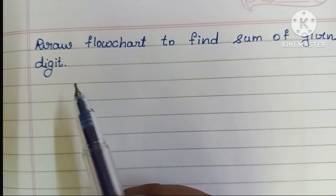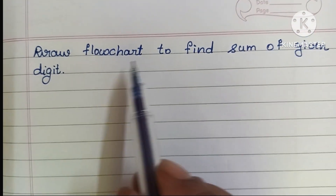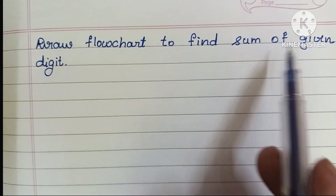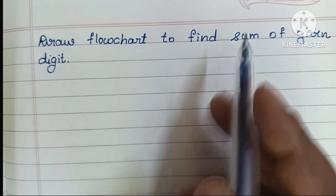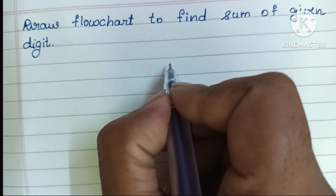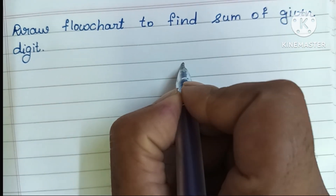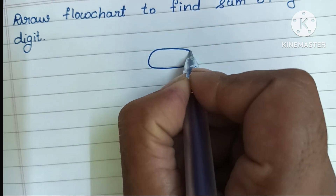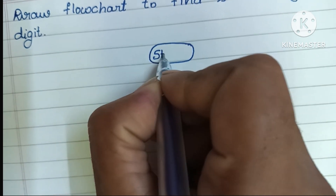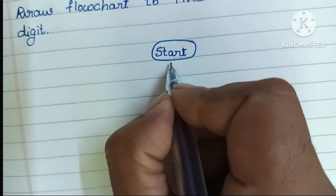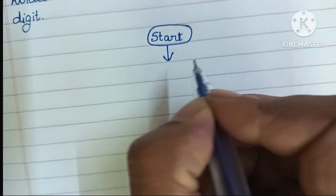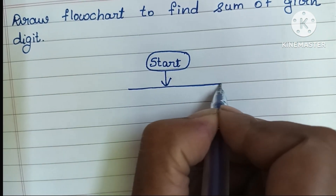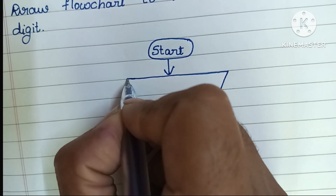Hi guys, in this video we are going to learn how to draw a flowchart to find the sum of digits of a given number. A flowchart always starts with a start statement, which is written within an oval shape.